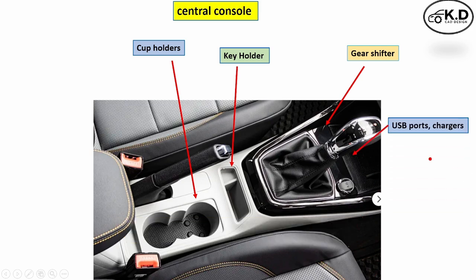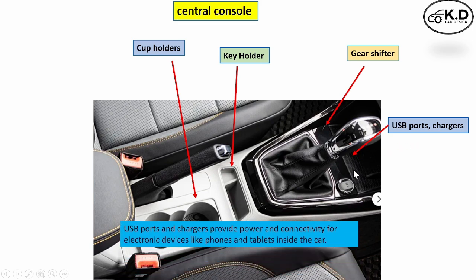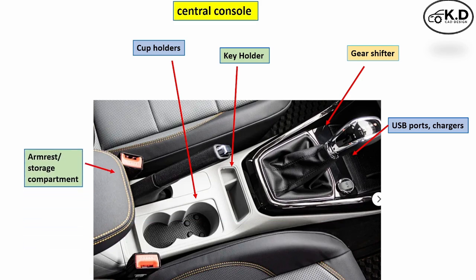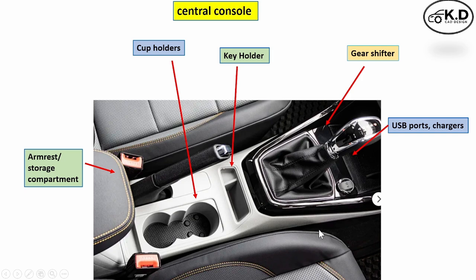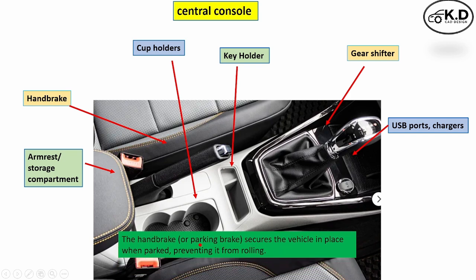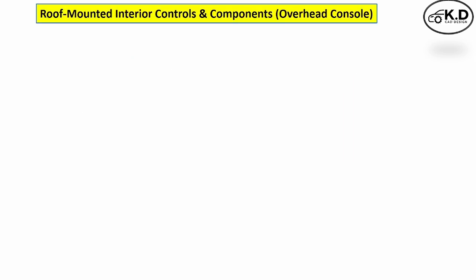The next part is the USB power charger, which provides connectivity to the mobile and other devices for charging. The next part is the center armrest, which provides comfort and support to the arm of the driver as well as the co-passenger. The next part is the handbrake, an additional security system helpful for stopping and blocking the vehicle during parking.